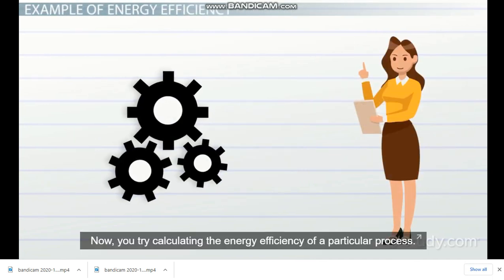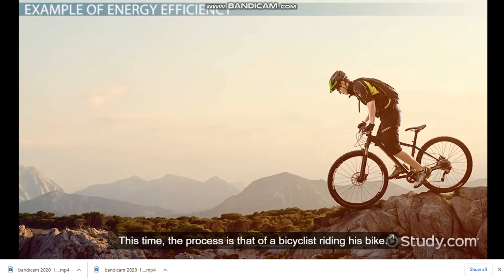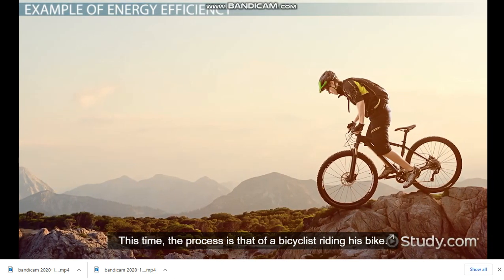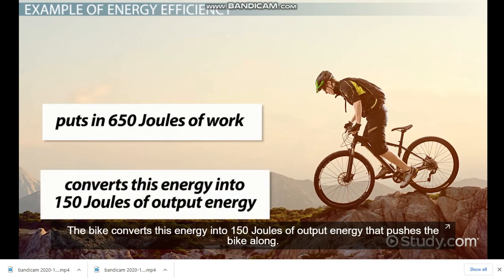Now, you can try calculating the energy efficiency of a particular process. This time, the process is that of a bicyclist riding his bike. The bicyclist puts in 650 joules of work into pedaling his bike. The bike converts this energy into 150 joules of output energy that pushes the bike along.